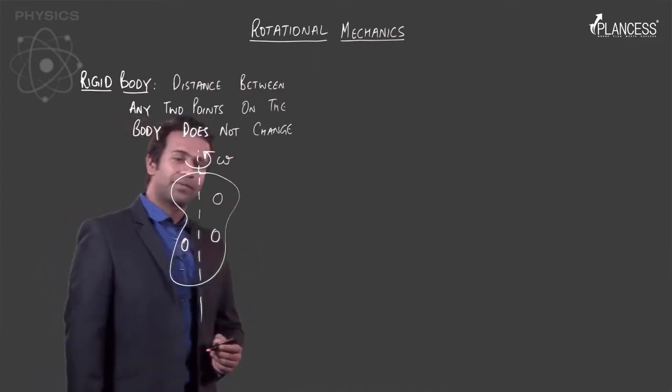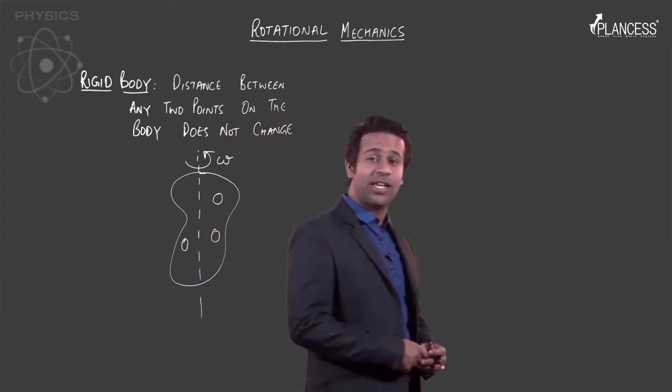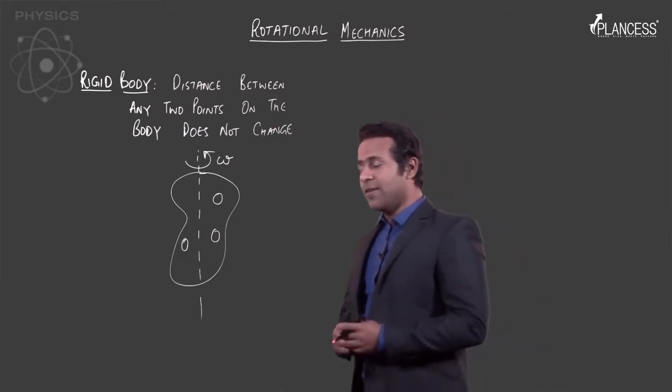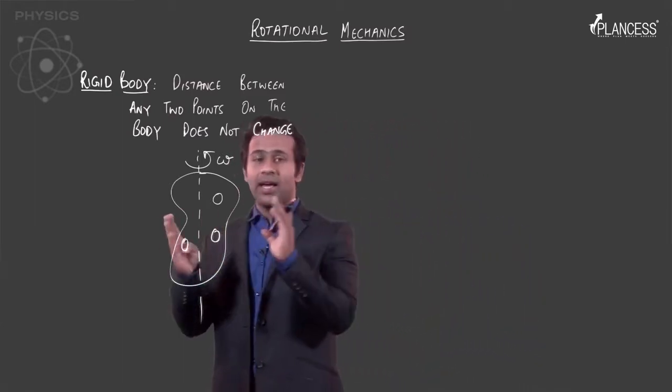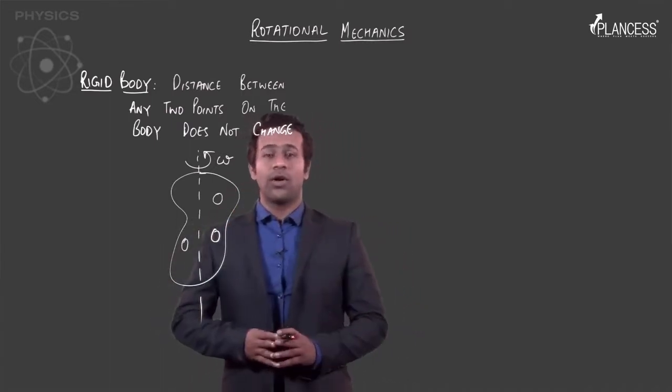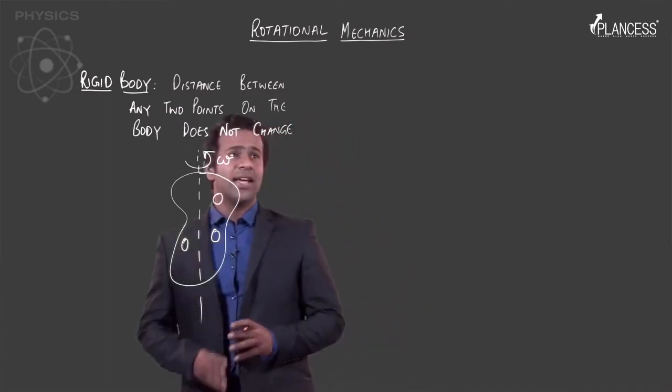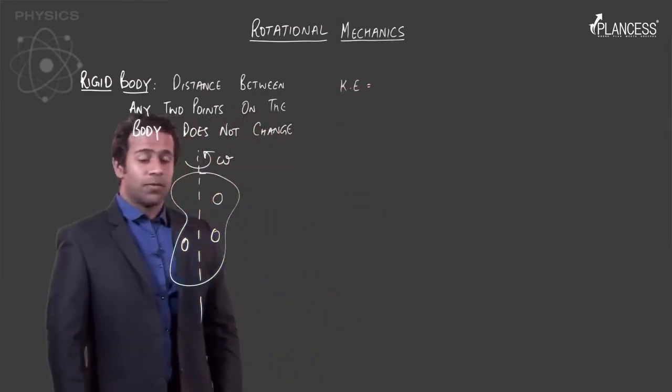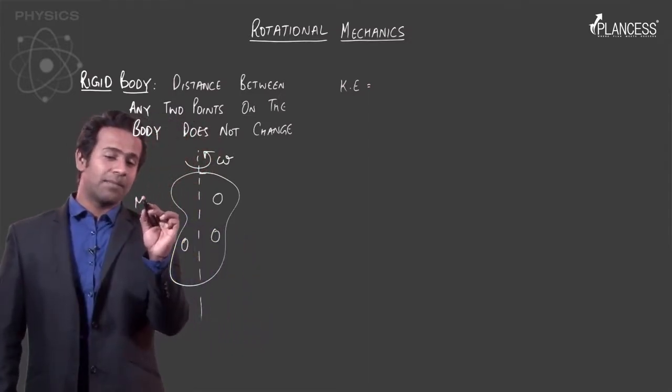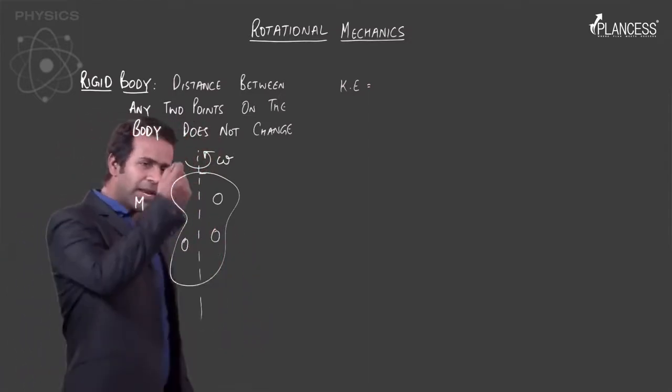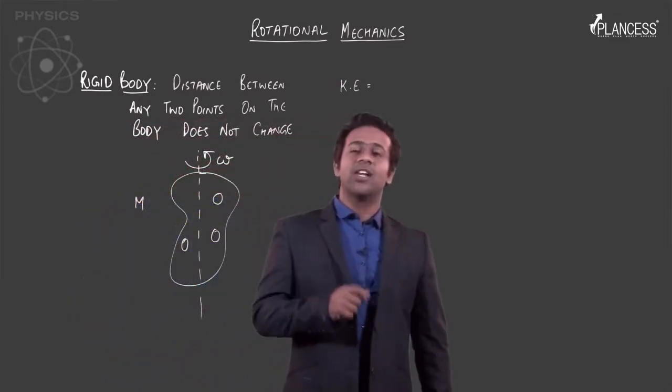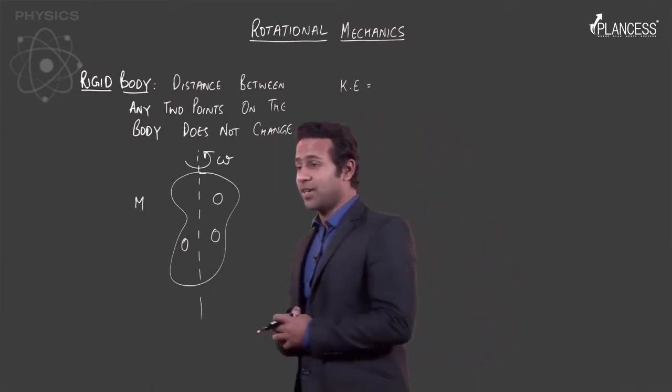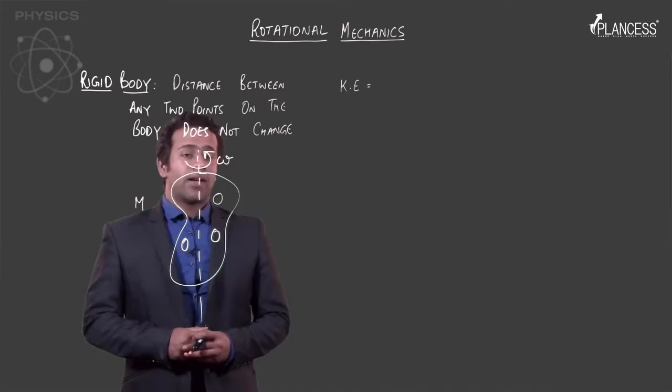If I do so, then I have given you that this body rotates with an angular speed omega. I hope you remember angular speed and angular velocity, we read about this in circular motion. So it is given that this rigid body is spinning about this axis with an angular velocity omega. We wish to find the kinetic energy of this body.